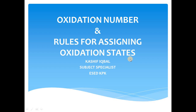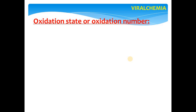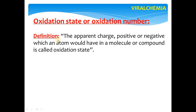So, what is Oxidation State or Oxidation Number? The apparent charge — positive or negative — which an atom would have in a molecule or a compound is called Oxidation State. For example, within H₂O, there is Hydrogen and Oxygen. What charge is on H, or what charge is on O?